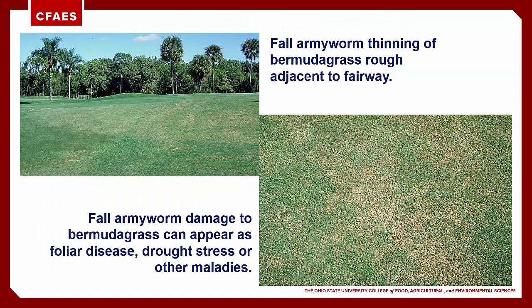Young armyworm larvae can cause a general thinning of the turf which can be mistaken for drought or heat stress, lack of fertility, or even a foliar disease. Turf managers should never assume that thinning is just from lack of fertilization or irrigation — take a close look to ensure something else is not going on. It's pretty easy to discover armyworm larvae when they are abundant; simply spread the turf canopy and look in the thatch zone for caterpillars or their frass pellets, or better yet use a detergent flush.